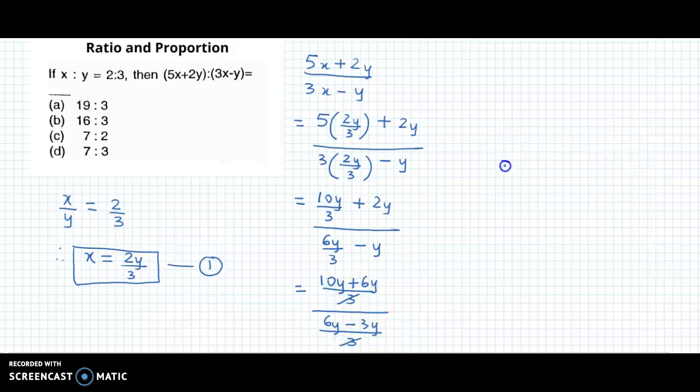We have 16y in the numerator. 10y plus 6y is 16y, and 6y minus 3y is 3y in the denominator. Now we can cancel off y as well.